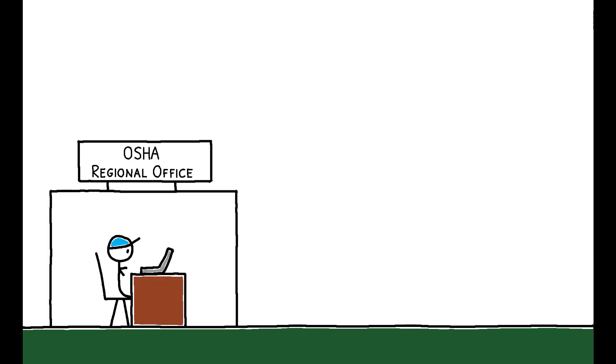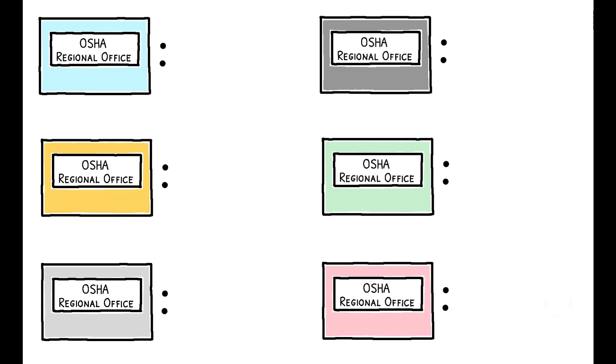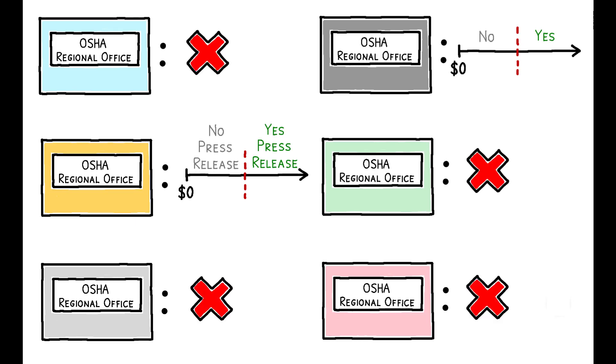Importantly, after an inspection, OSHA can issue a press release to publicize noncompliance at a particular facility. For much of the 2000s, each of OSHA's regional offices set their own criteria for when to issue press releases. While some did so when the penalties exceeded a certain cutoff, others effectively never issued them at all.